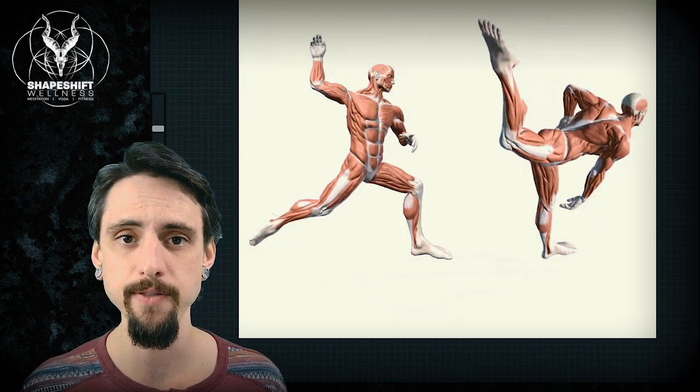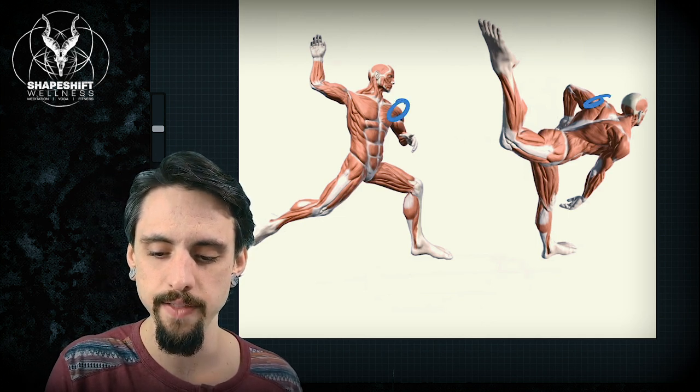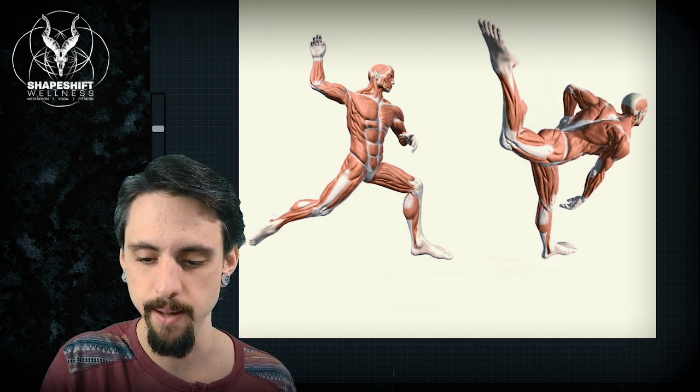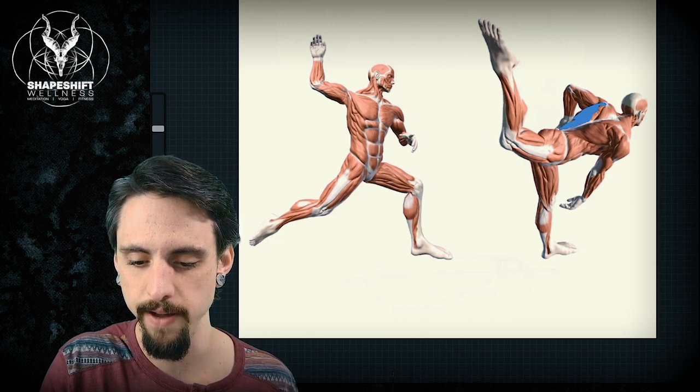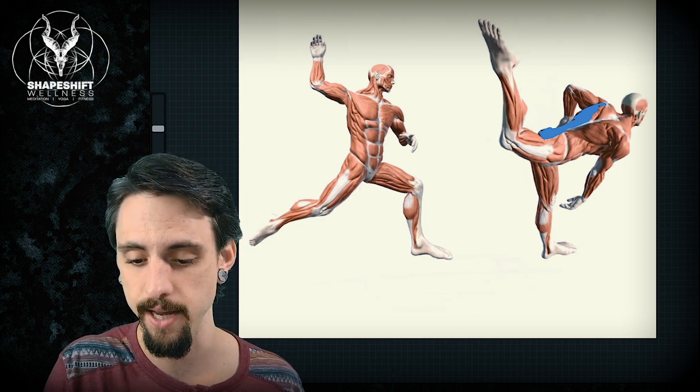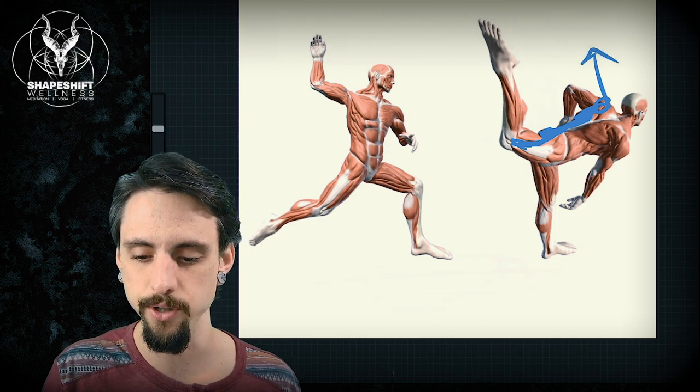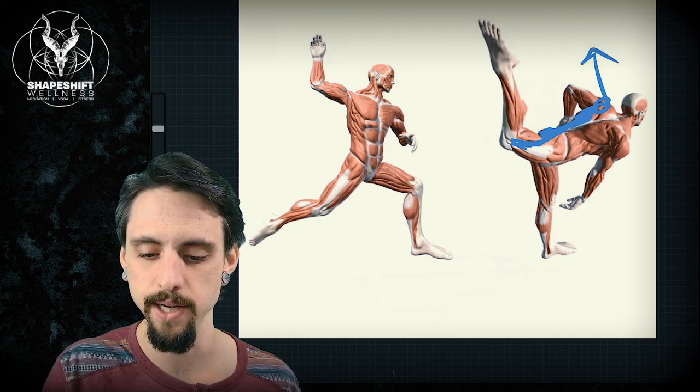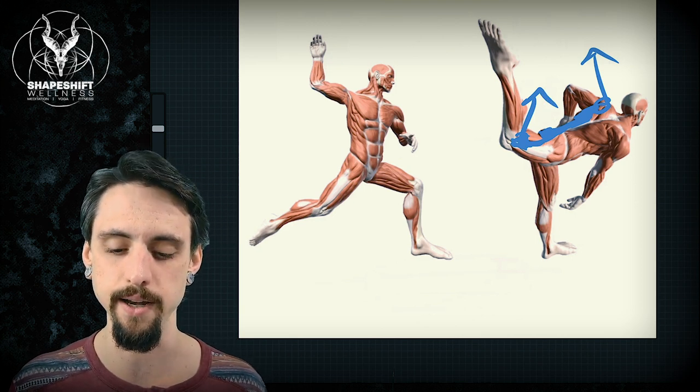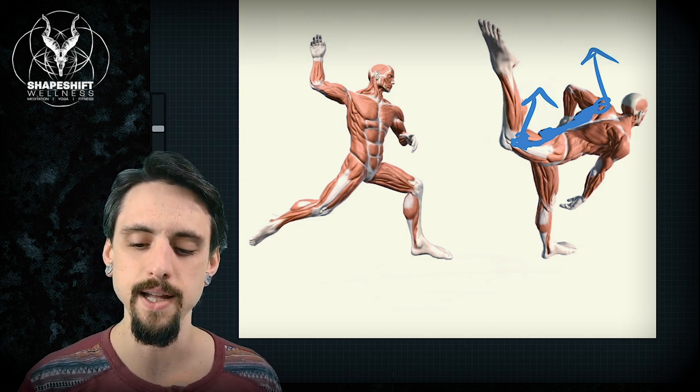We're going to start with the back functional line on this guy. So he pitches the ball and his left shoulder starts forward and then it moves backwards. So what happened is the lats pulled on the thoracolumbar fascia through the glutes on the right side, on the opposite side, and then through the vastus lateralis to pull the left shoulder back and to extend the right hip and externally rotate it a little bit because of its attachment to the knee joint through the vastus lateralis. So that's the back functional line.